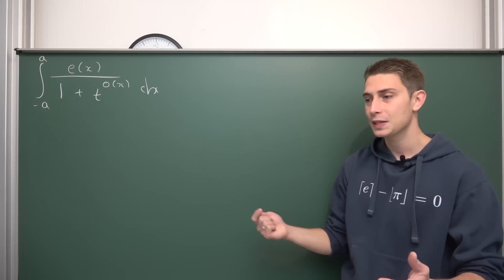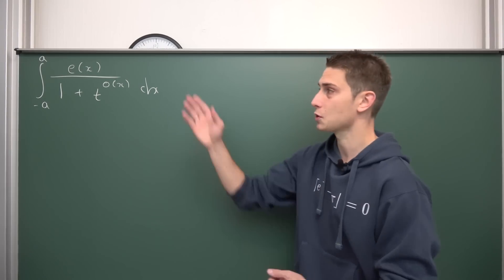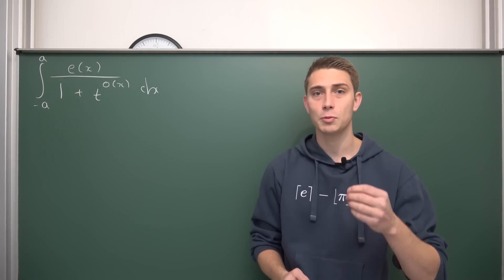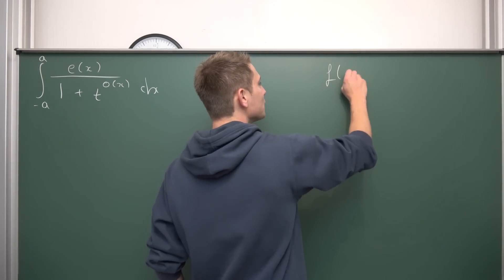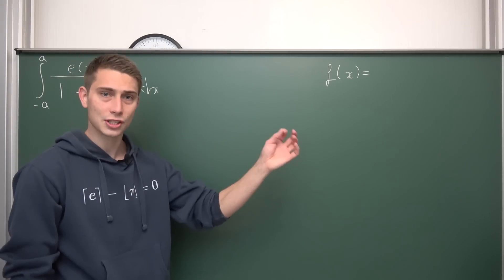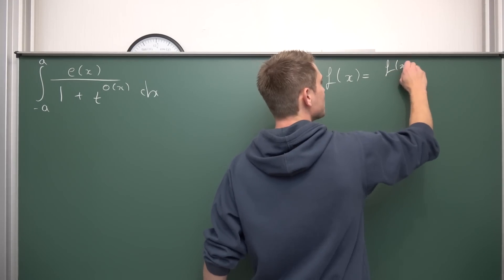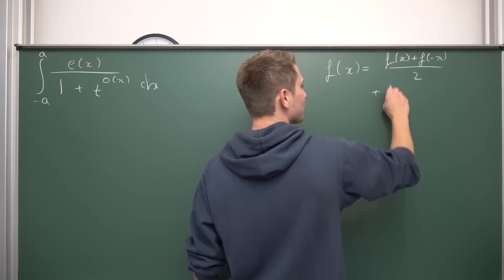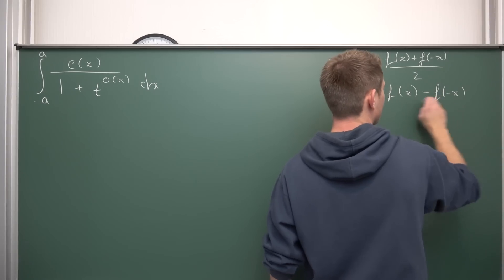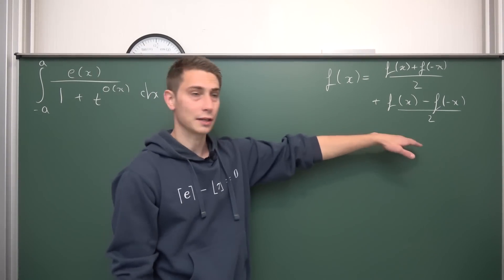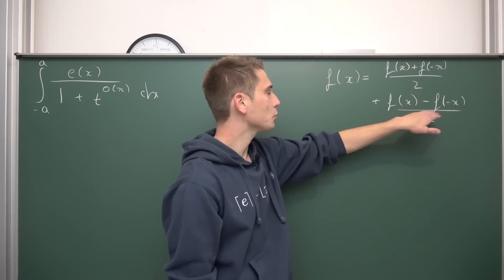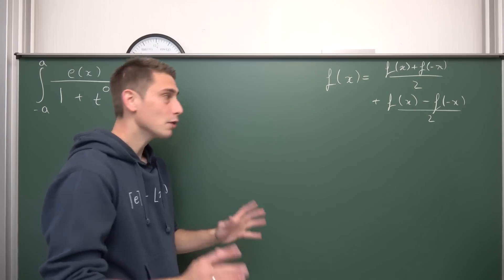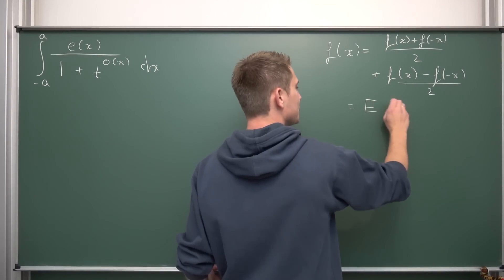Now we are going to do something that I have already done in a different integral of this kind — that's just a generalization. This is a technique I introduced at the start of this channel: namely that we can take a function f of x and decompose it into an odd and an even function. It's going to be of the form: f of x plus f of minus x over 2, and we add to it f of x minus f of negative x over 2. You can just go through the calculations — the odd parts cancel and we get 2 times f of x over 2, which is f of x. This works for each and every nice function. We'll call these the even part e and the odd part o.